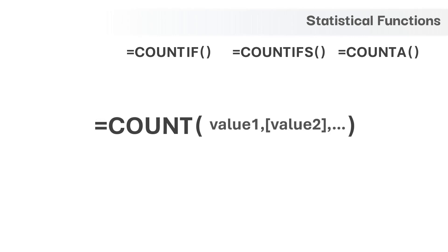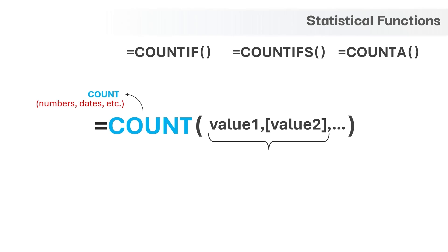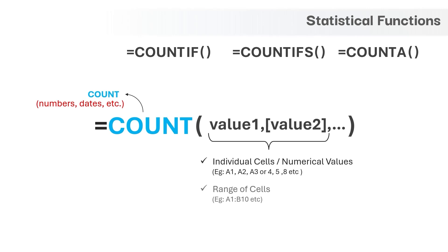The COUNT function has only one mandatory argument. Basically, the COUNT function is used to count the number of records in a particular column or in a range of cells, but it counts only numerical values and dates, and will ignore all text values including the boolean values TRUE or FALSE. The first argument is value1, which can be an individual cell or numerical values. You can also give a range of cells with numerical values as input to the value1 argument and it will give the count of all numerical records.